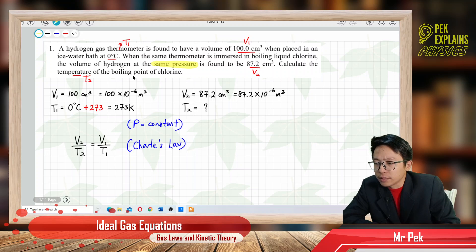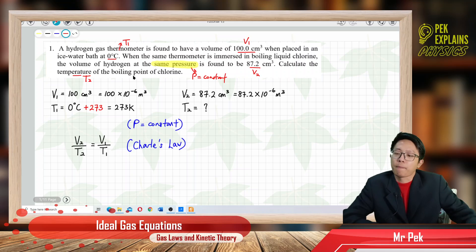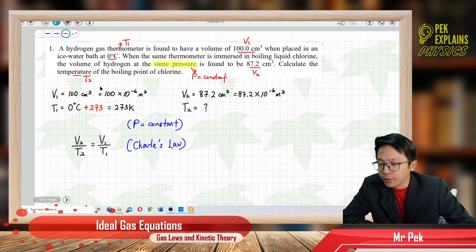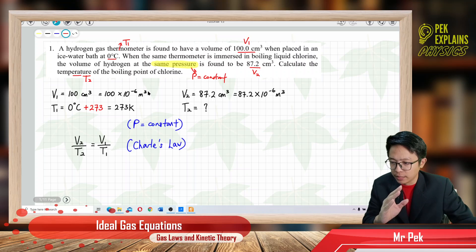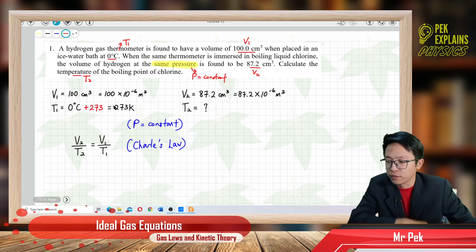The pressure is constant, so I put down the information here: we have V₁, T₁, V₂, and T₂. I arrange it systematically with one on the left-hand side and two on the right-hand side, so it's easy for you to extract the information.